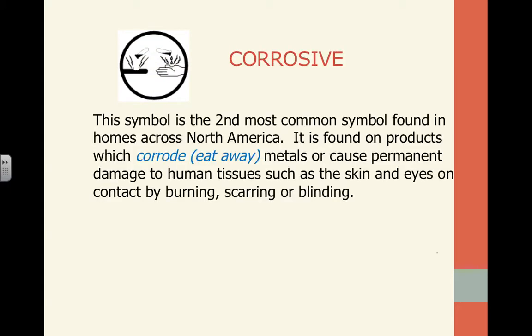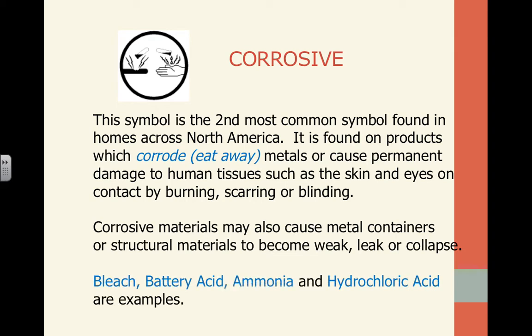The next symbol is corrosive — the second most common found in North America. Corrosive products eat away at metals or cause permanent damage to human tissues such as skin. Eye contact can cause burning, scarring, and blinding. These corrosive materials can sometimes be strong enough to weaken metal containers or structural materials, causing them to leak or collapse and cause further damage. Examples include bleach and hydrochloric acid.